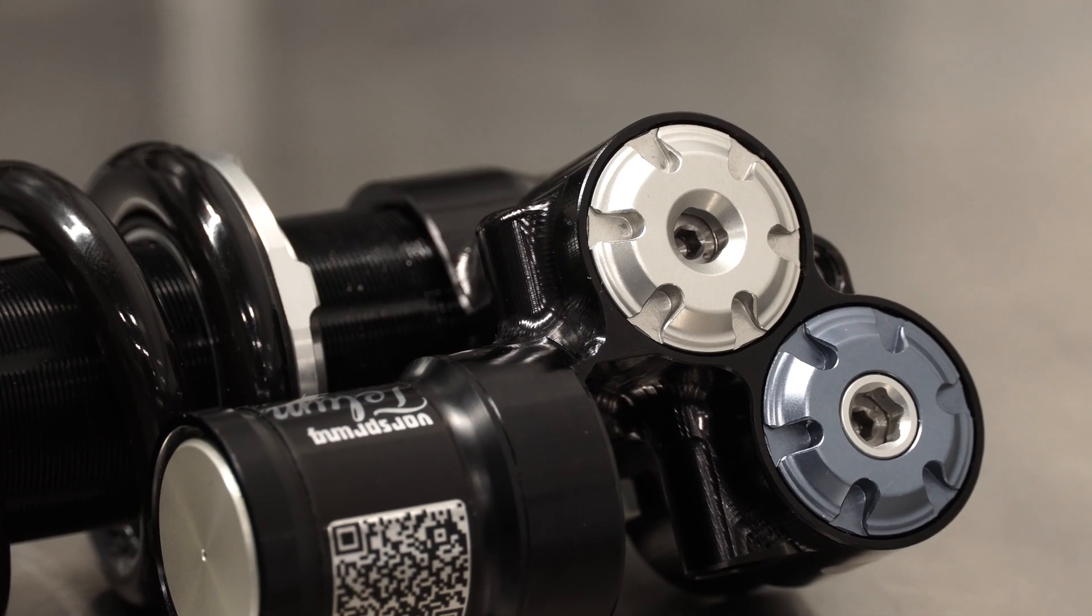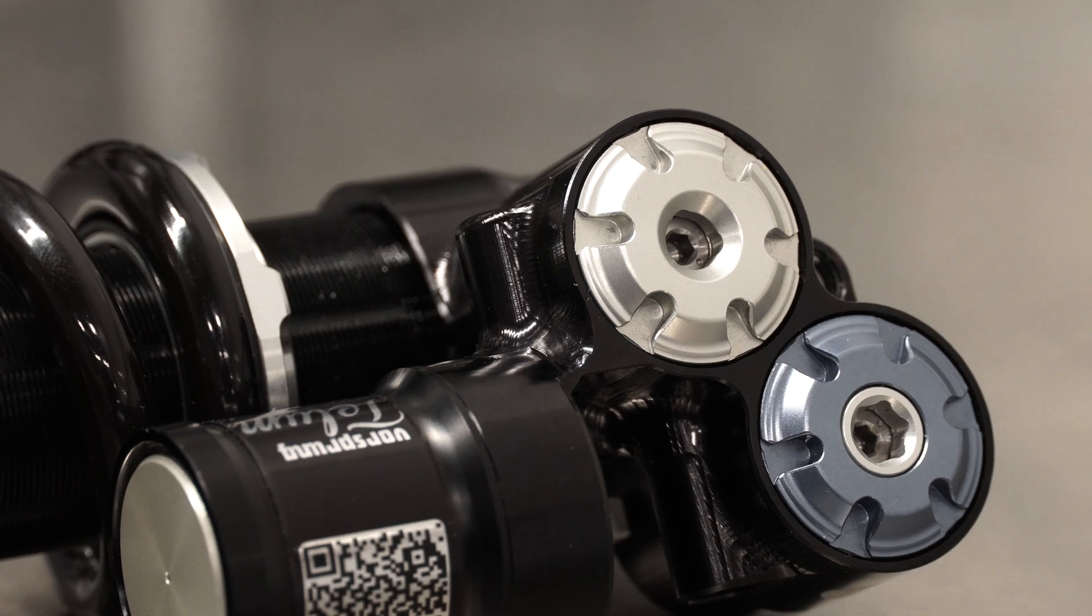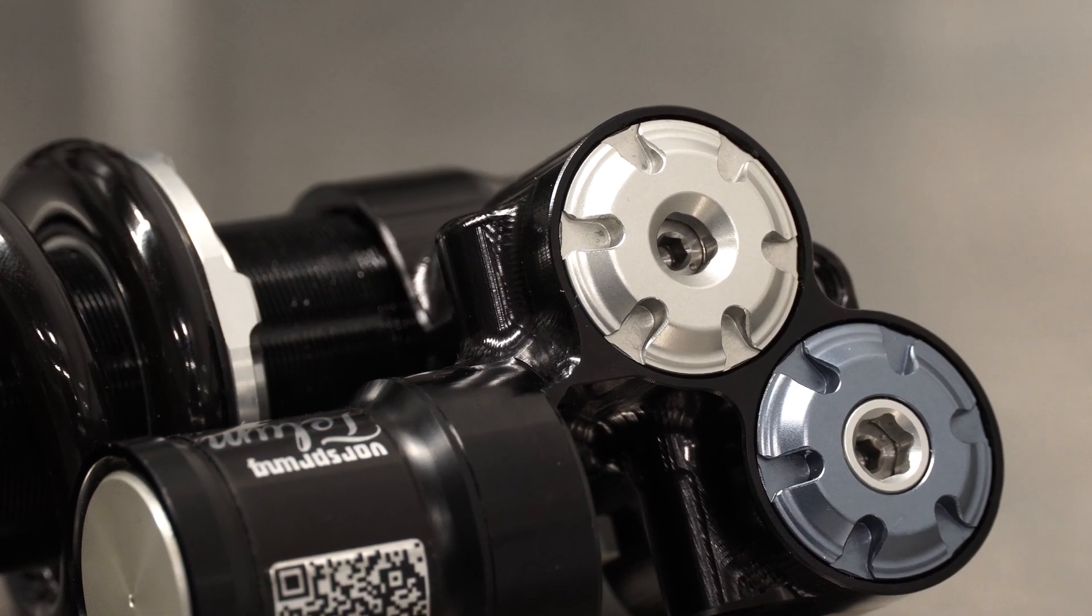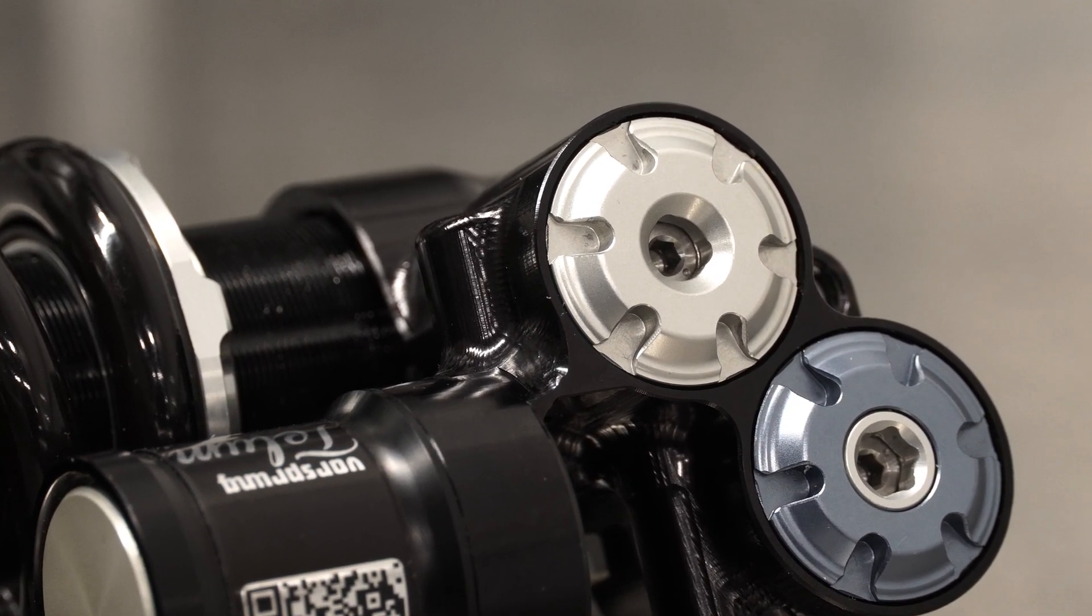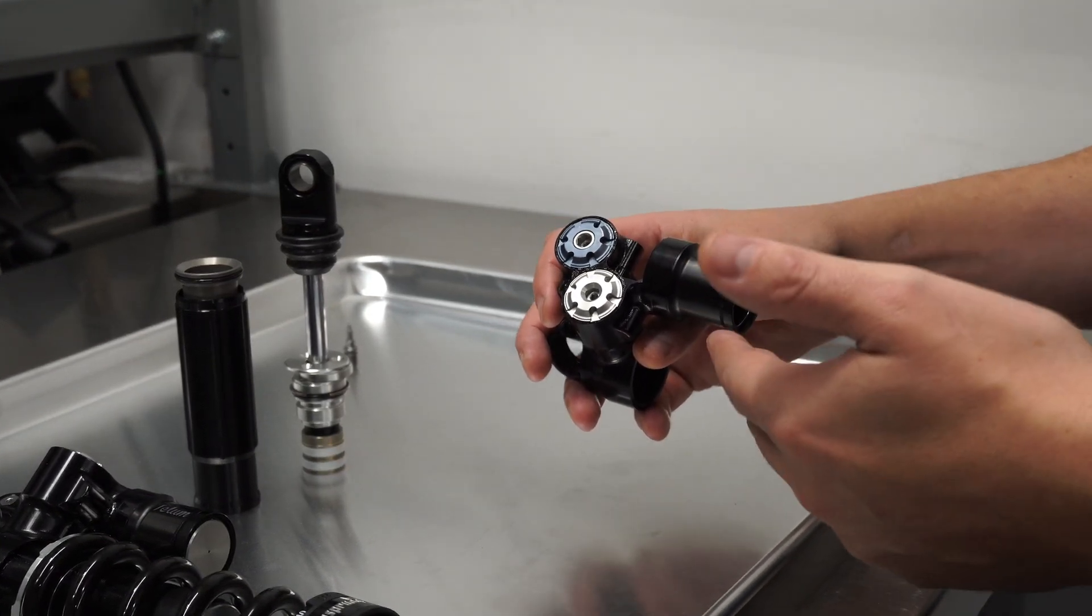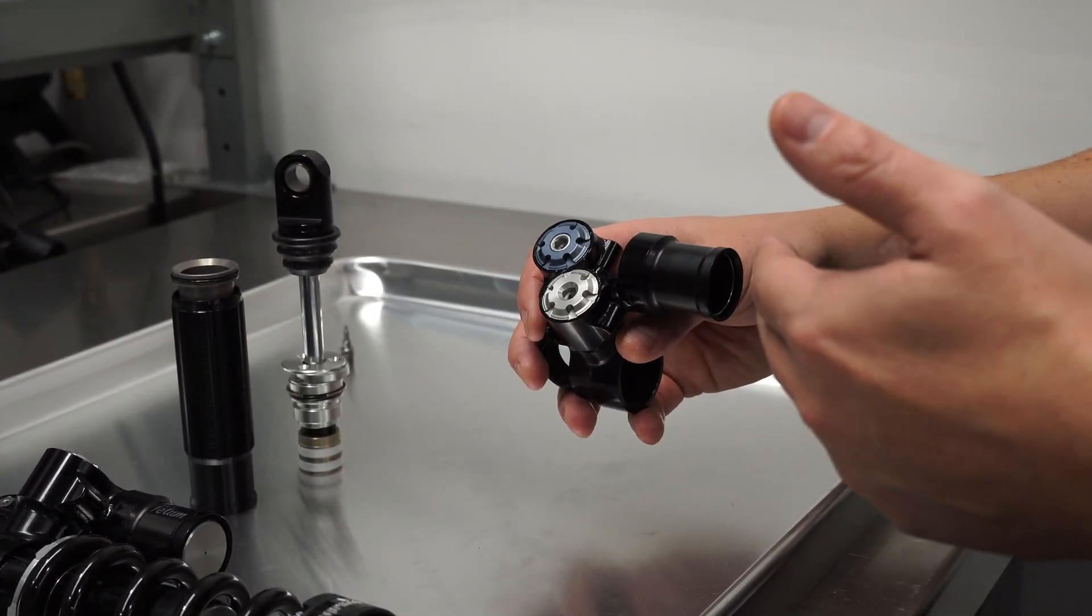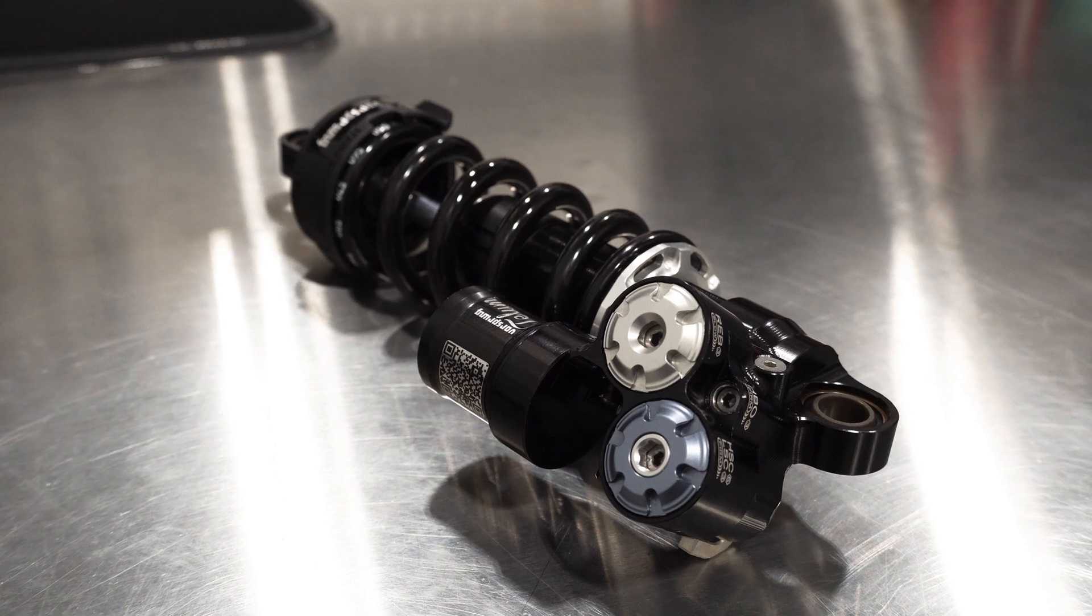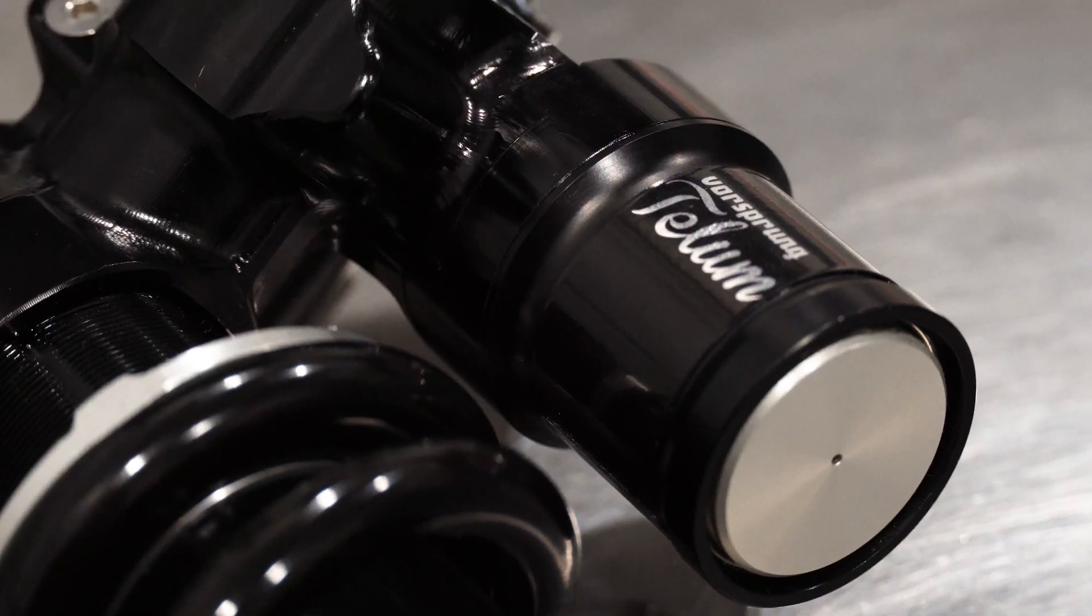You'll notice that there's no high-speed rebound adjuster. Our first prototypes actually had them. Why would we remove them or not put them into production? Well, four main reasons. First, because the relatively limited range of velocities in rebound and much higher damping rates compared to compression, there ends up being a massive overlap between high and low speed rebound adjusters of almost any kind.